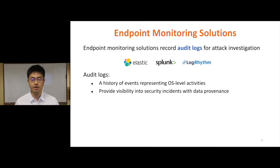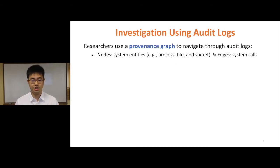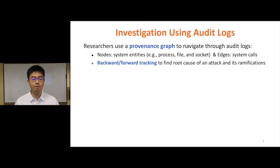Audit logs can provide deep visibility into security incidents with data provenance. Here we present a simplified log entry of a system call record. During provenance analysis, we can find the information flow from a file to a process. To facilitate attack investigation, researchers use a provenance graph to navigate through audit logs. The nodes in the graph are system entities — process, file, and socket — and edges are system calls. Analysts can perform backward tracking based on security incidents to find the root cause of the attack, and then perform forward tracking to find its ramifications.